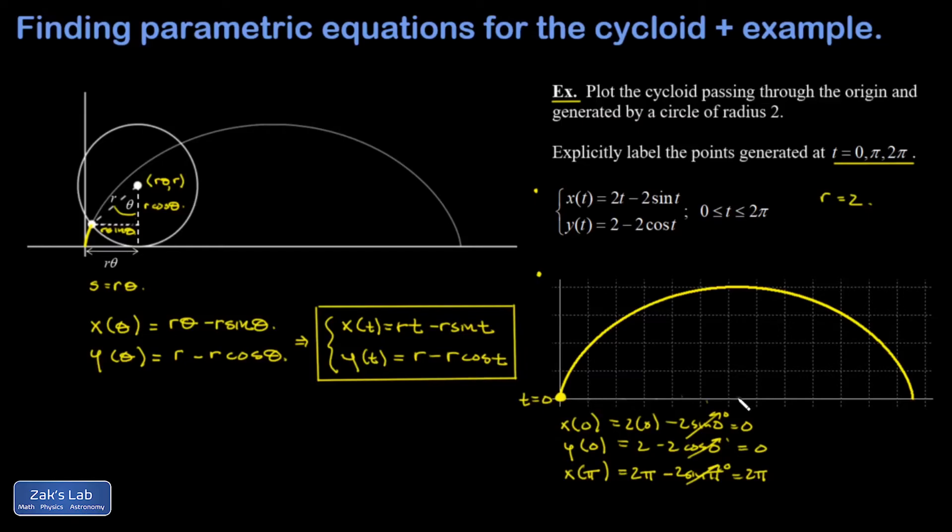If I look at y(π), that's 2 minus 2 cosine of π. Cosine of π is negative 1, so this gives me 4, and the y coordinate is 4. In fact, the point on the cycloid we're talking about is the point of the maximum height.